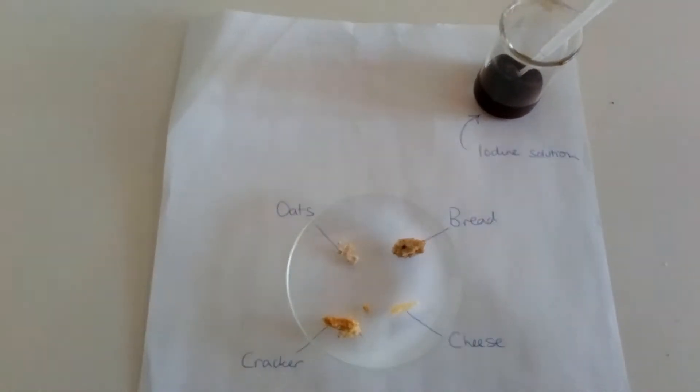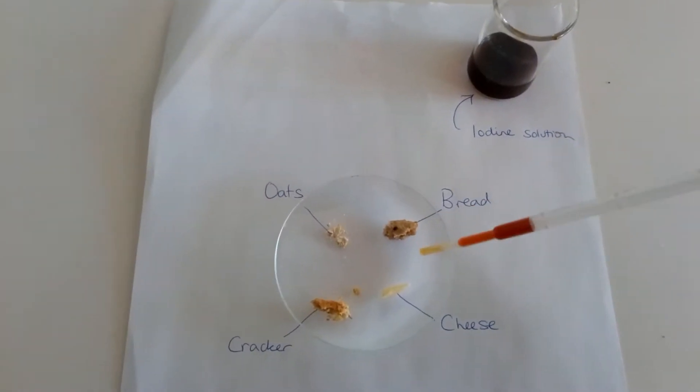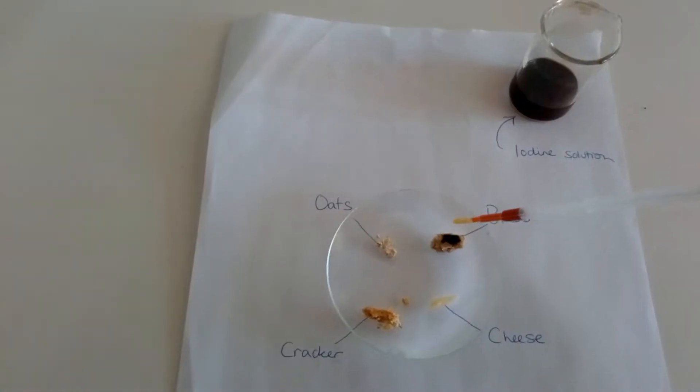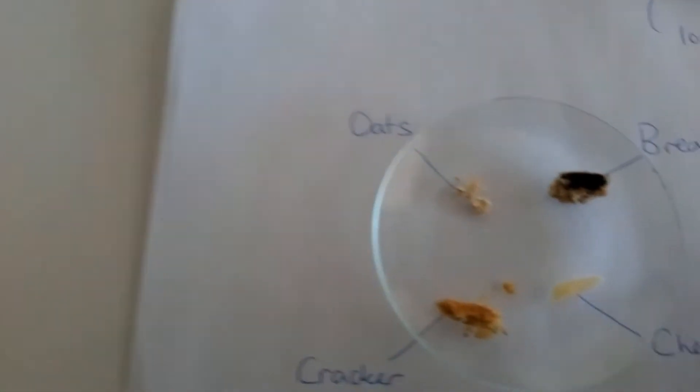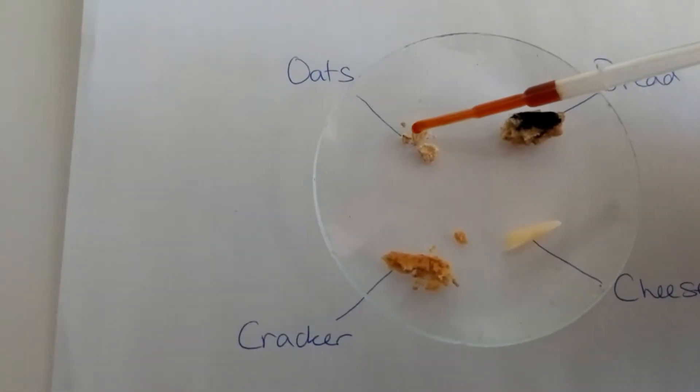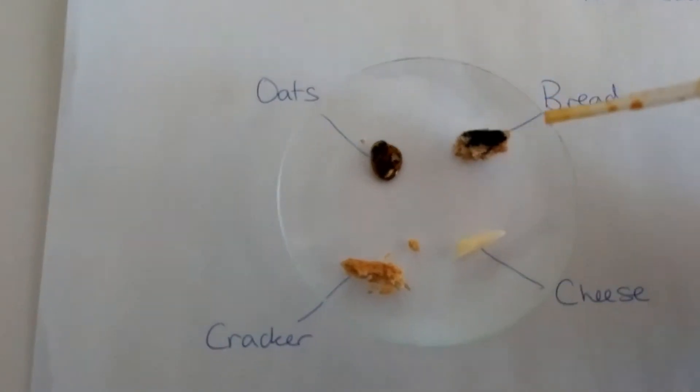If we take a little bit of the iodine there, you'll see it's the orange brown color, and pop that onto the bread. You'll see immediately that has gone a black color. Put it on the oats, same again that's gone a black color.